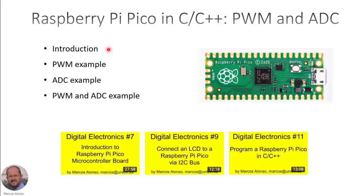Hi everybody, welcome to this video entitled Raspberry Pi Pico in C, C++, PWM and ADC. This is the outline of this presentation. We will see first an introduction, then we will show a PWM example, an ADC example, and a combined example of PWM and ADC.